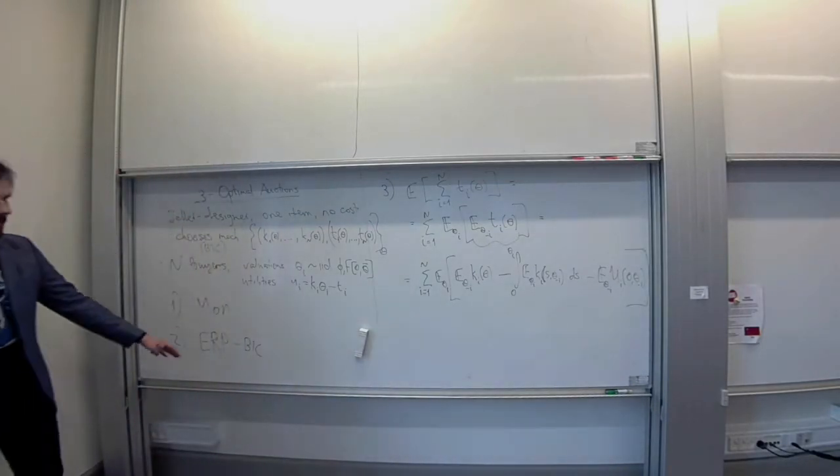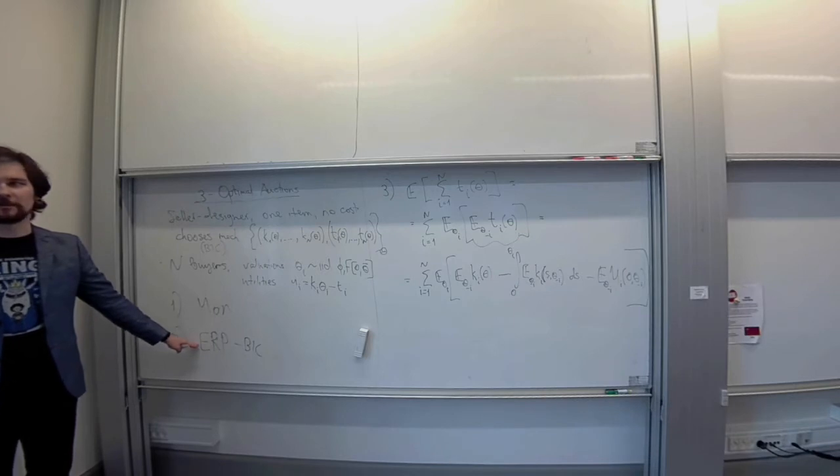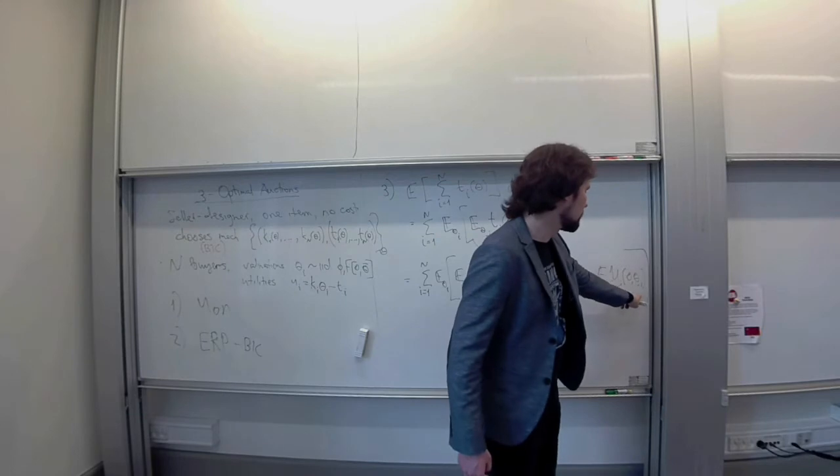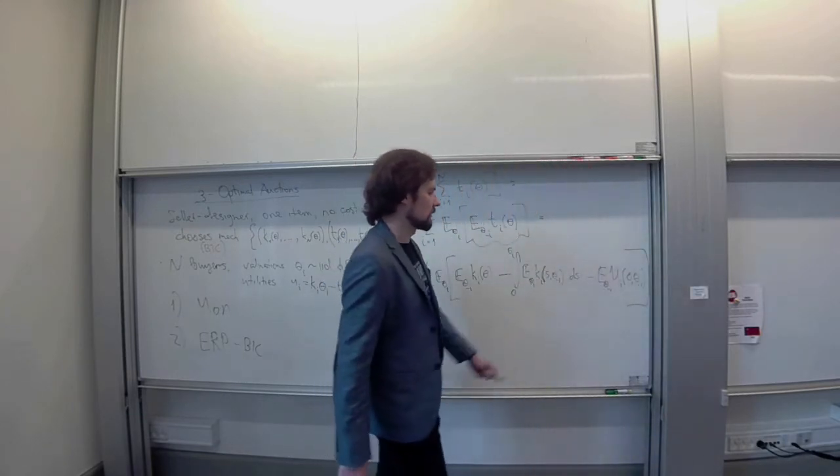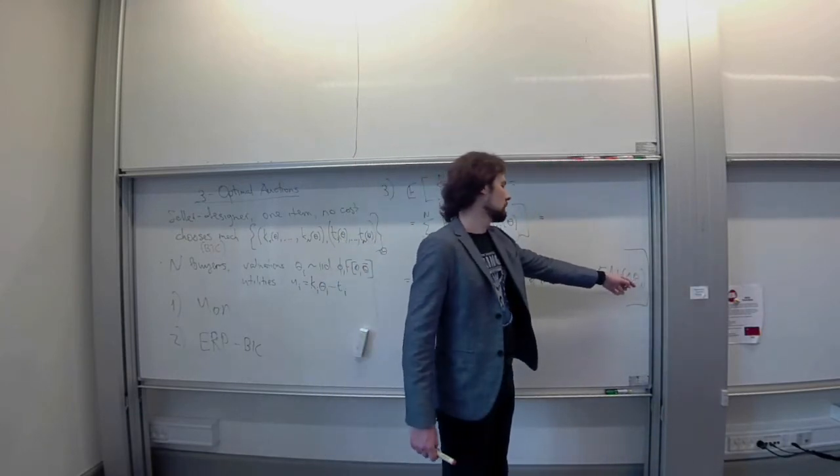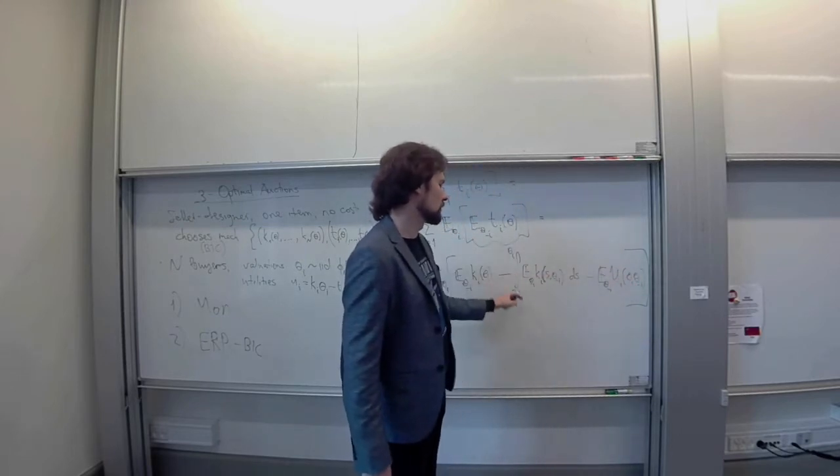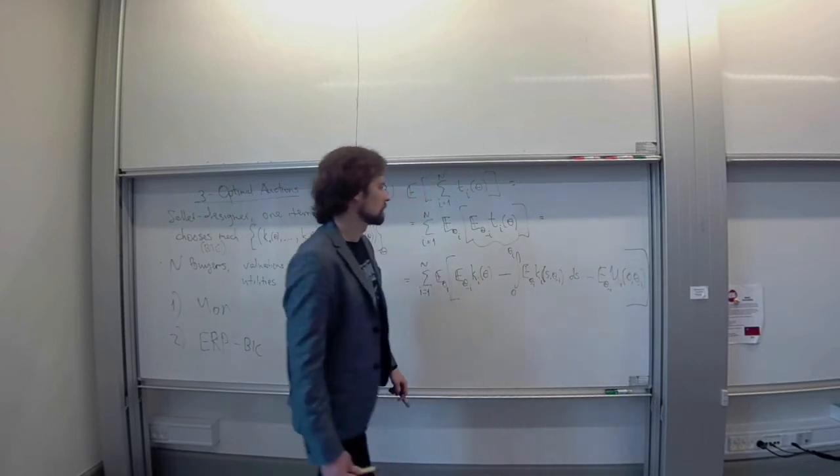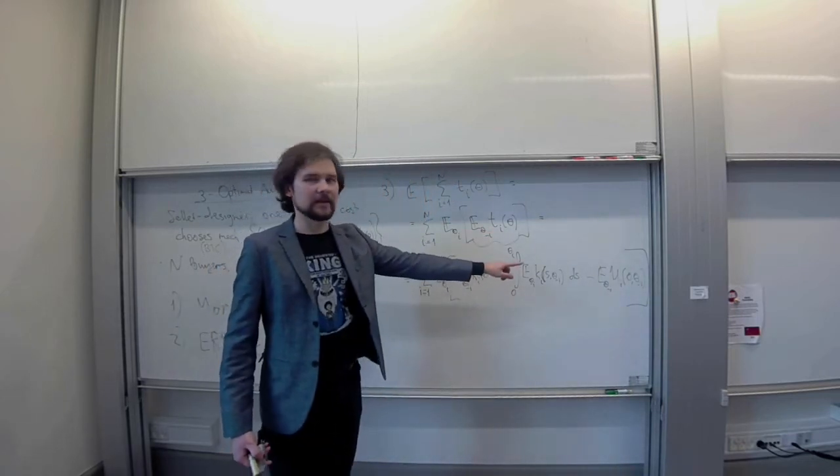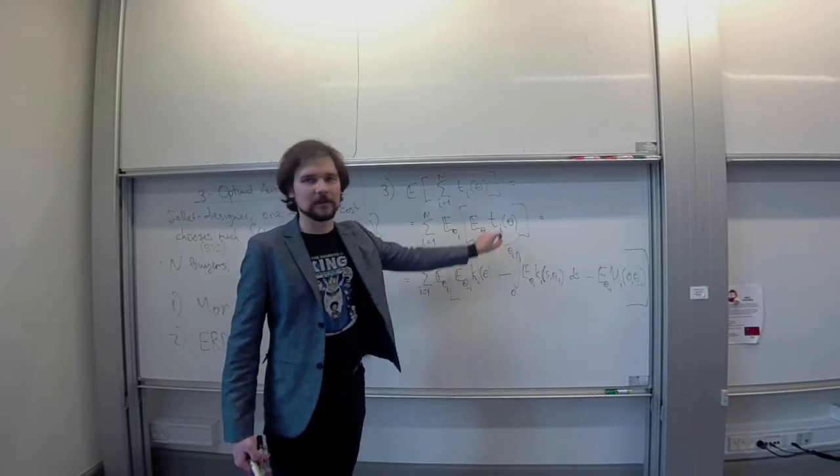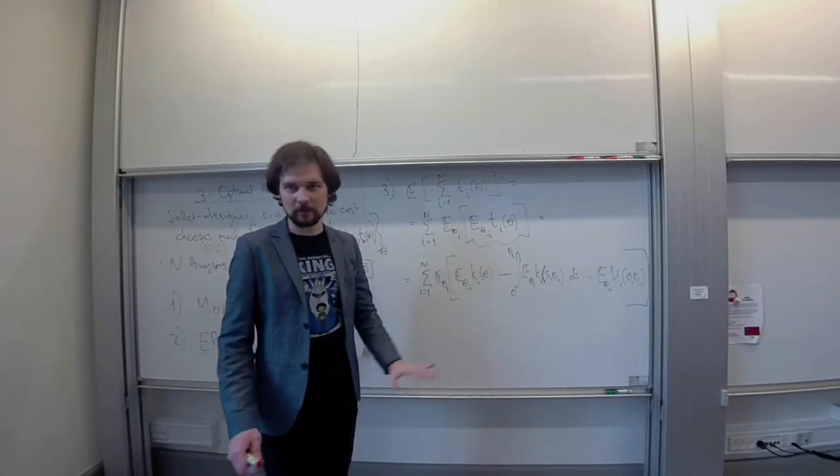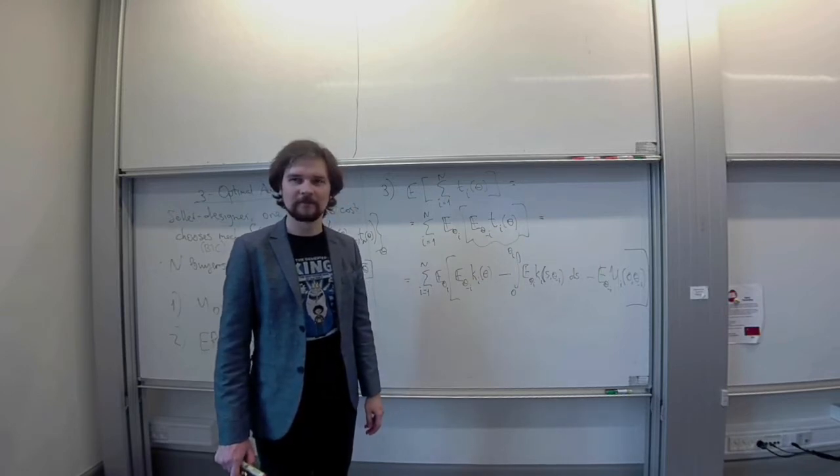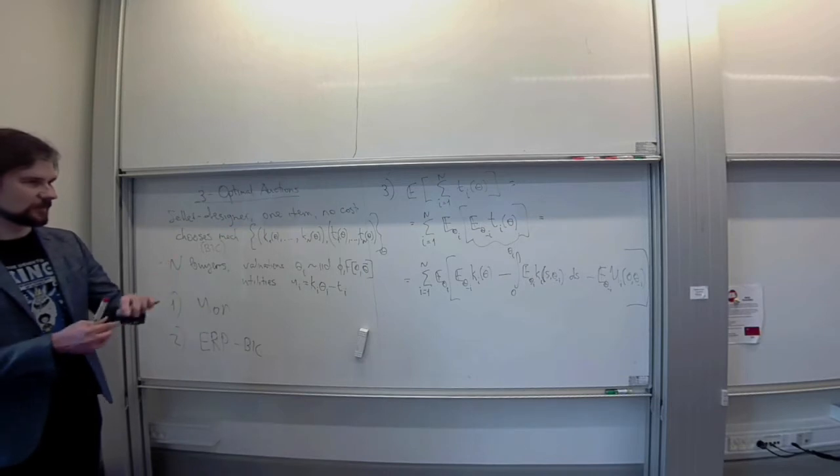Okay. So, this is exactly what envelope representation of pairs looks like in Bayesian setting. It says that the expected utility of any type theta i can be expressed as the expected utility of the lowest type, plus the integral of allocations, of expected allocations. And so, then we can use that expected utility to express expected transfers. Right? See what I'm doing here? You see what I'm doing here? More or less?